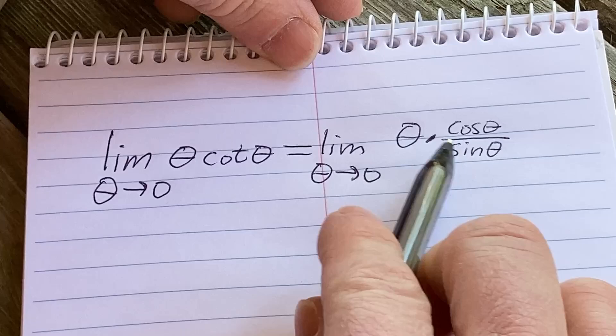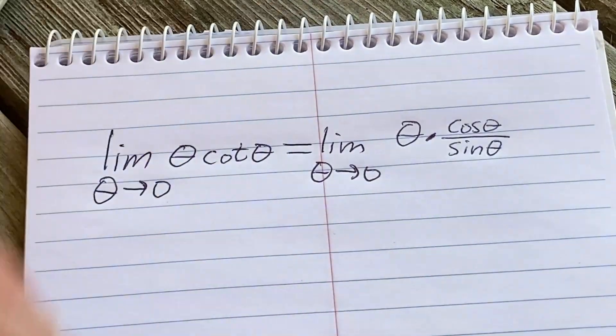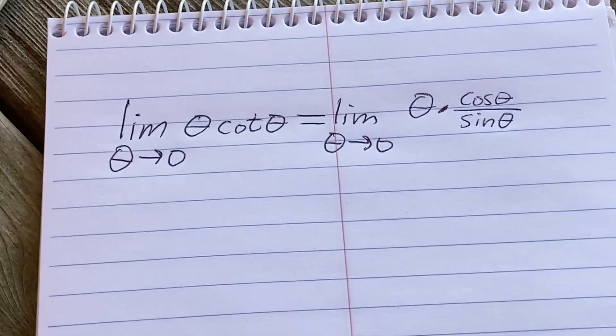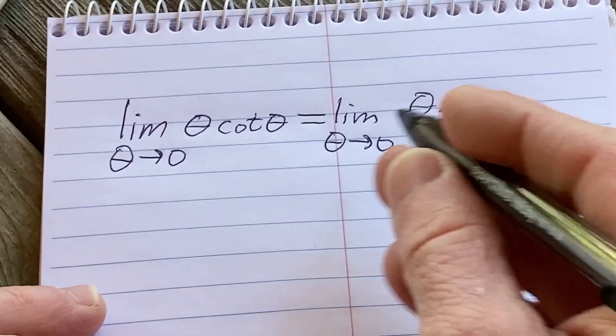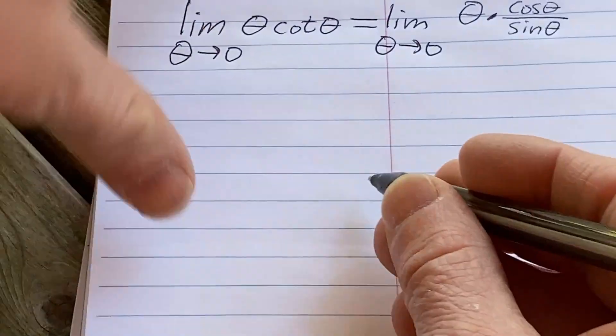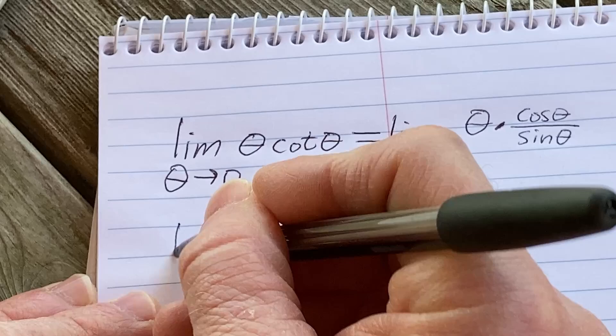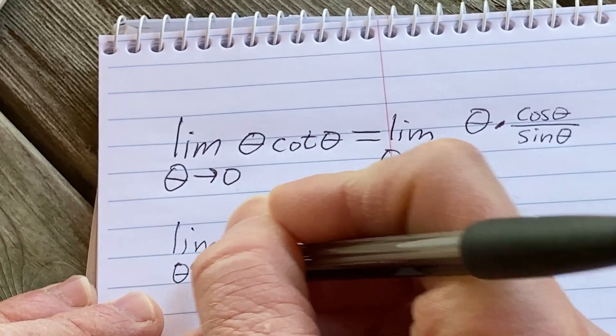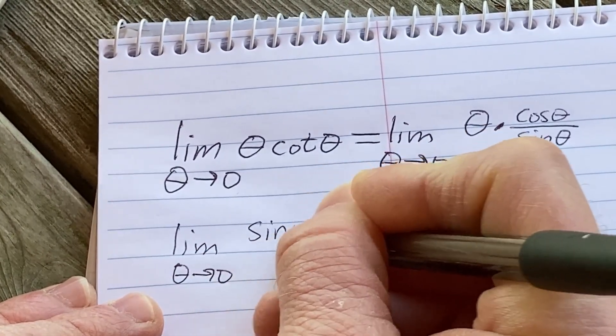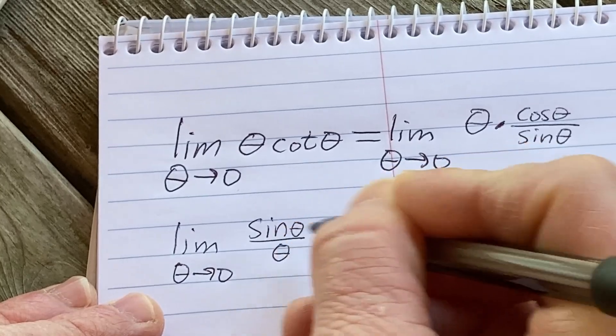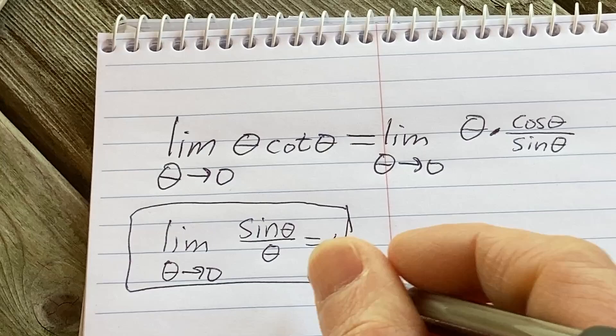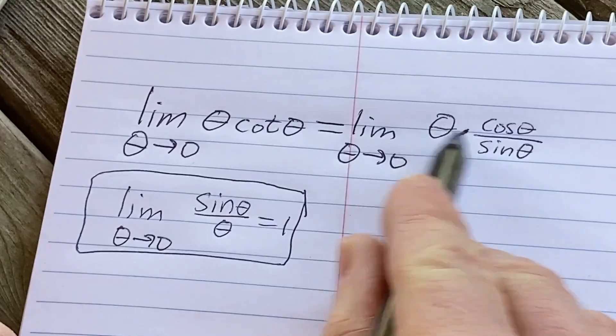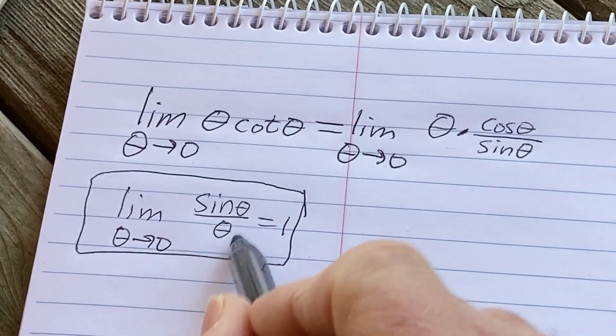Now you notice here you have a theta and a sine theta. So there is something that is really important that is taught and I believe Stein teaches it in this section. Yeah it's this here. If you have the limit as theta approaches zero of the sine of theta over theta, this is equal to one. This is a very very useful fact.